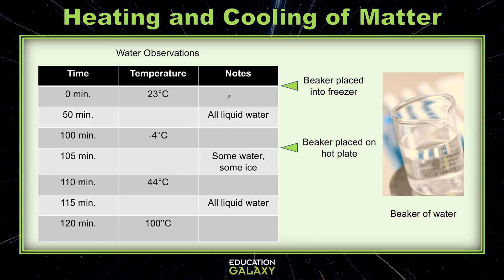We see that after we just place the beaker into the freezer, the water temperature is still room temperature, or 23 degrees Celsius. After 50 minutes in the freezer, the water is still liquid, so we can assume the notes should say all liquid water. In the next empty space we're missing a temperature — since the water is still in the liquid state, it has to be warmer than zero degrees Celsius. So I'll pick a temperature, 10 degrees Celsius, and we'll fill that in.